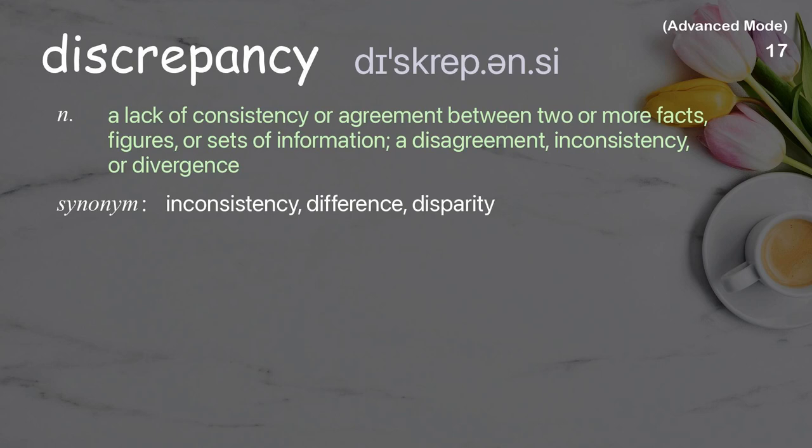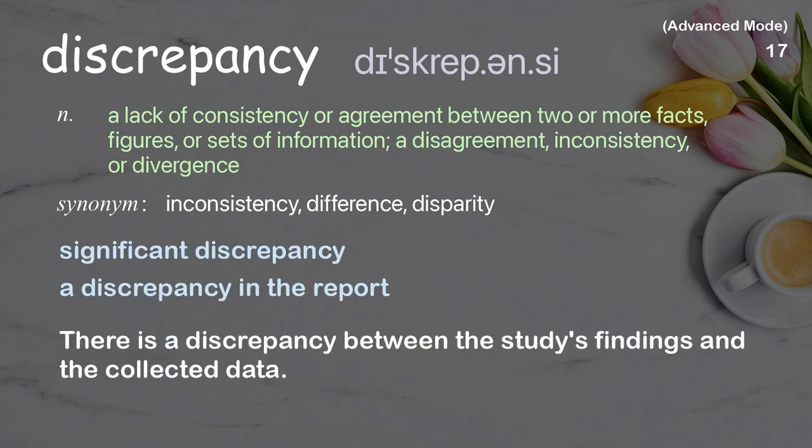Discrepancy: a lack of consistency or agreement between two or more facts, figures, or sets of information; a disagreement, inconsistency, or divergence. Examples: significant discrepancy, a discrepancy in the report. There is a discrepancy between the study's findings and the collected data.